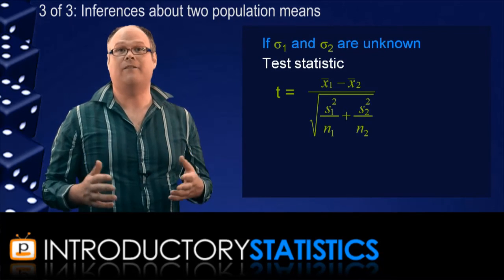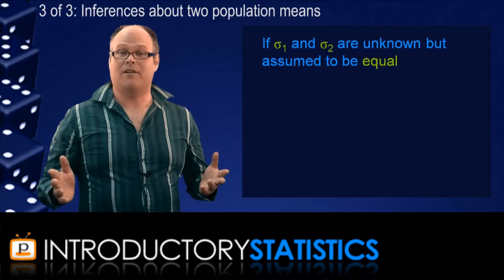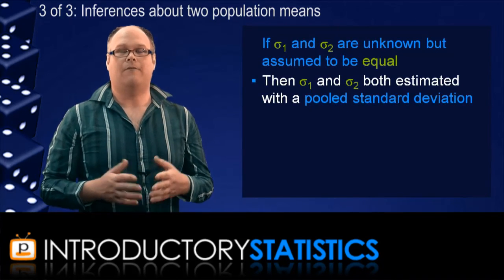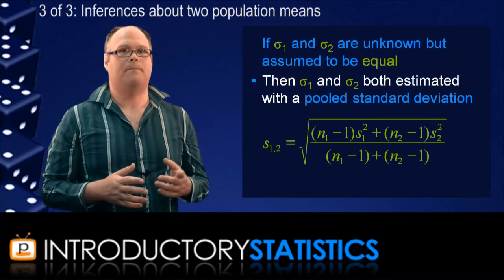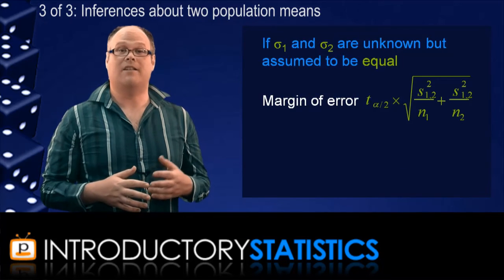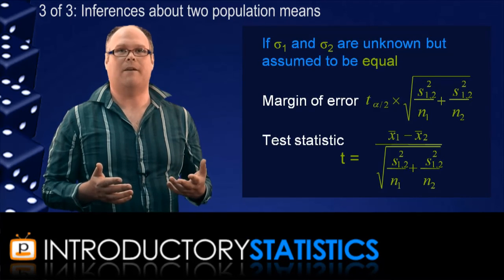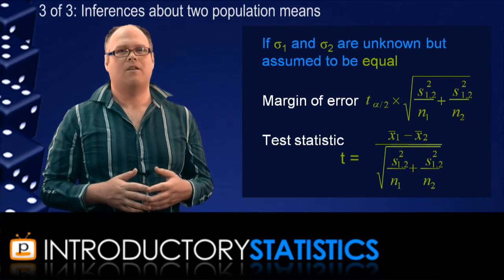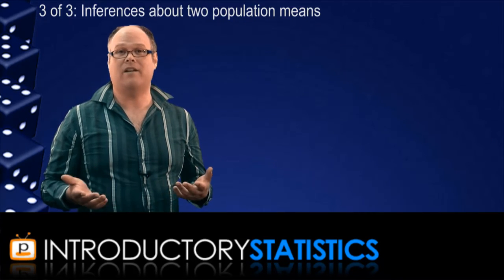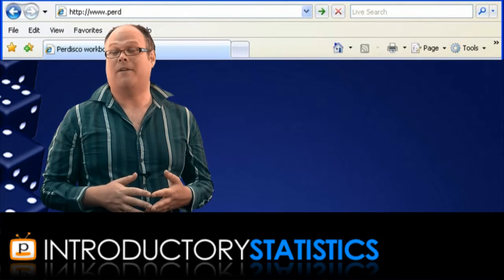Finally, the third case: if we do assume that the two unknown standard deviations are equal, then instead of estimating them with separate sample standard deviations, we estimate them with the same pooled standard deviation. The formula for the pooled sample standard deviation is given, and this pooled standard deviation is used in both the margin of error and the test statistic. There are a lot of different possibilities here, and you'll get better at spotting the correct method to use as you get more practice. In the Pedisco workbook, there are a variety of questions that help you detect which situation you're in and which method to use.